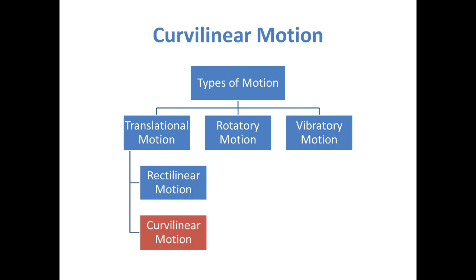Translatory motion is a motion by which a body shifts from one point to another, or it is a motion in which a body changes its position with respect to its surrounding. Rotatory motion is a motion in which a body rotates around a fixed axis. Vibratory motion is a motion in which a body moves from one point to another point and back to its initial point, and this cycle repeats.